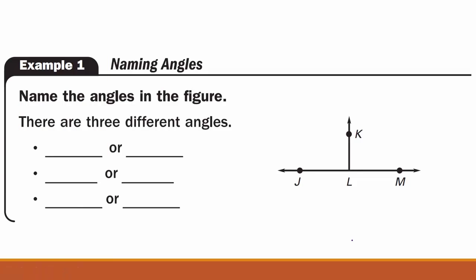Example one. Naming angles. In this example we are to name the angles in the figure. Now when you're naming angles, one thing that is important to know is where your vertex of your angle is. That will always be your middle letter. And usually when you name angles, you have three letters with the middle one being the vertex.